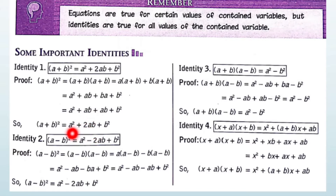AB and BA are the same, so you can write 2AB. Thus we get: (A + B) whole square equals to A square plus 2AB plus B square.